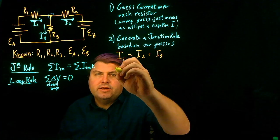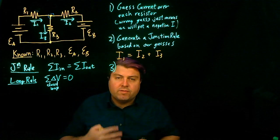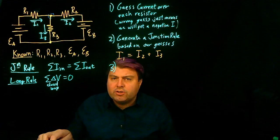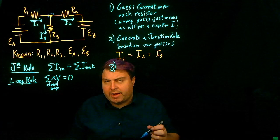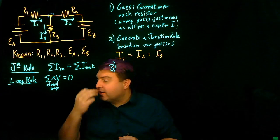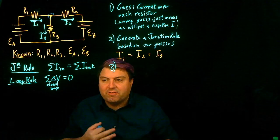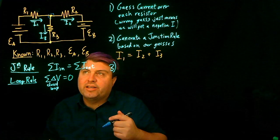So our next thing is that we're only going to have certain loop rules. Let's show the possible loops that we could have, and then we are going to show that we only need two of them, and in fact the third one is going to actually actively hinder us.